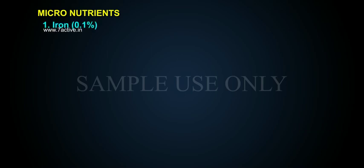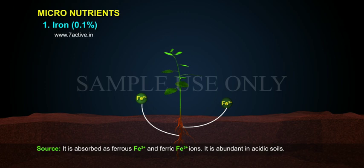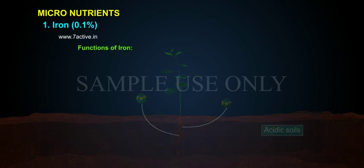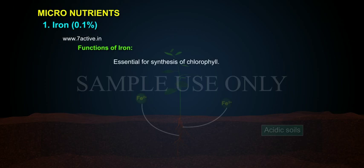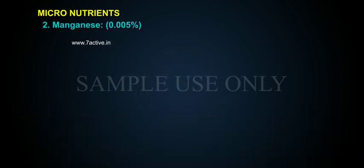Micronutrients. Iron makes up 0.1% and is absorbed as ferrous Fe2+ and ferric Fe3+ ions. It is abundant in acidic soils. Functions of iron: it is essential for synthesis of chlorophyll, a constituent of electron carriers cytochrome and ferredoxin, and an activator of oxidizing enzymes.